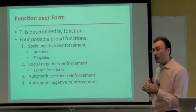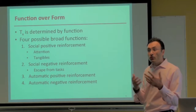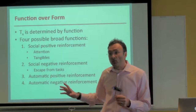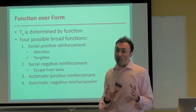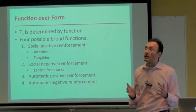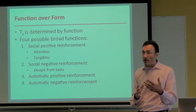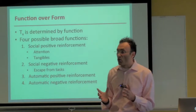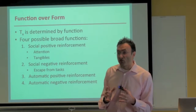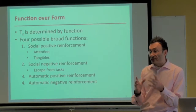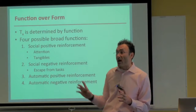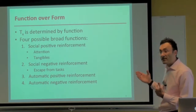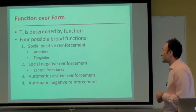Social negative reinforcement refers to doing something, and as a result somebody else takes away something that person finds aversive or unpleasant — so they are escaping or avoiding the event. Imagine a little girl during math class who's constantly screaming, and as a result the teacher takes away the math assignment so she escapes it. That might inadvertently be maintained by social negative reinforcement.